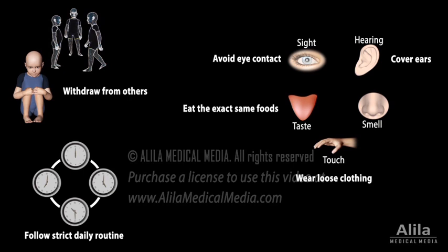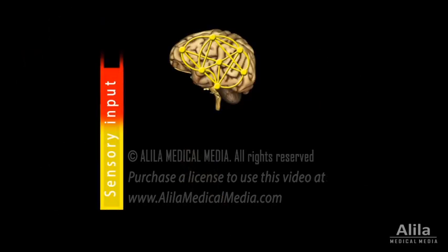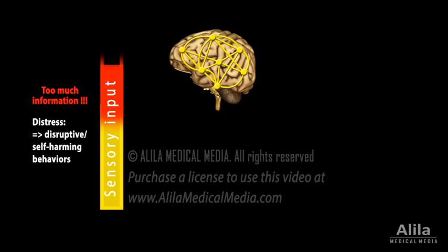Changes to a daily routine can cause stress and upset because they bring about new and potentially overwhelming information. Performing repetitive movements, known as stimming, is a common way to relieve stress. A person with severe autism may be at risk of overloading their brain with too much sensory input causing distress, which may lead to disruptive or self-harming behaviors.